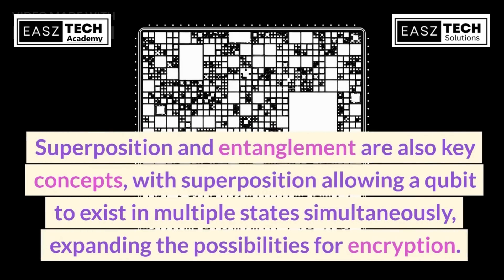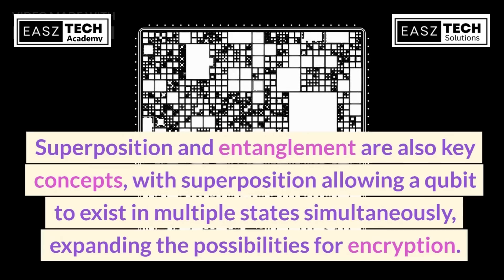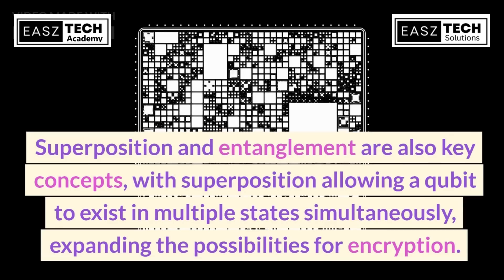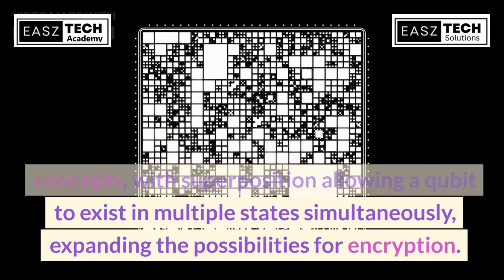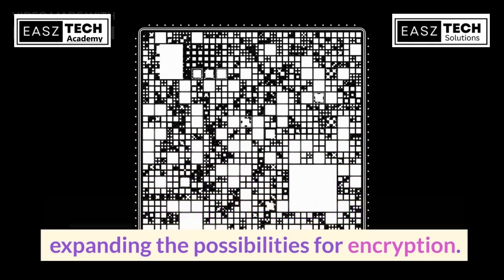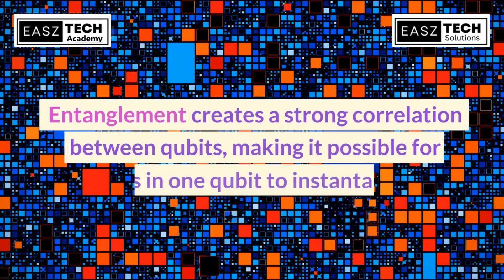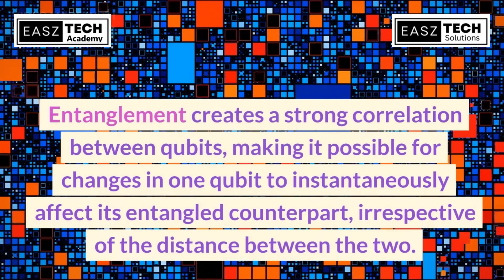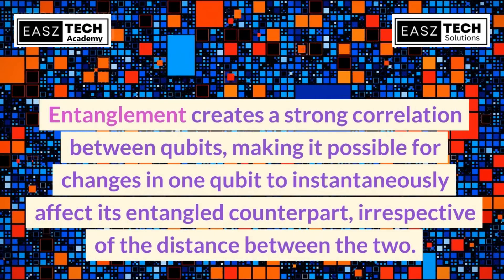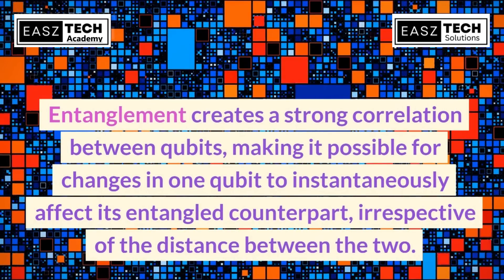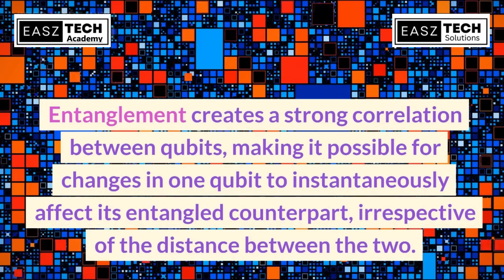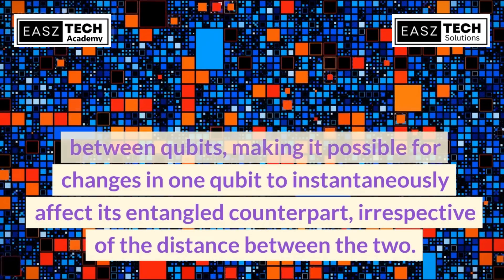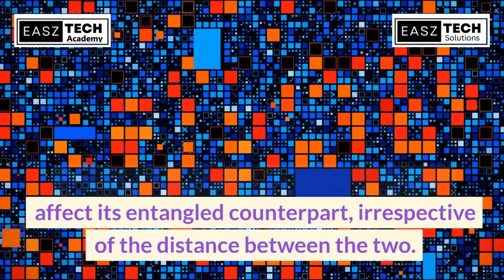Superposition and entanglement are also key concepts. Superposition allows a qubit to exist in multiple states simultaneously, expanding the possibilities for encryption. Entanglement creates a strong correlation between qubits, making it possible for changes in one qubit to instantaneously affect its entangled counterpart, irrespective of the distance between the two.